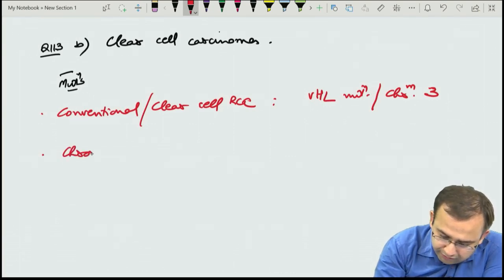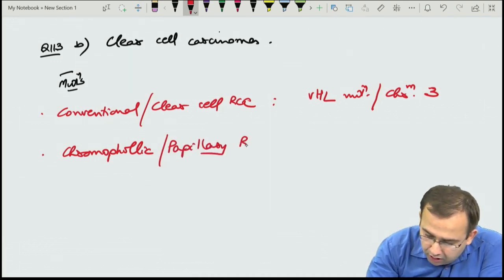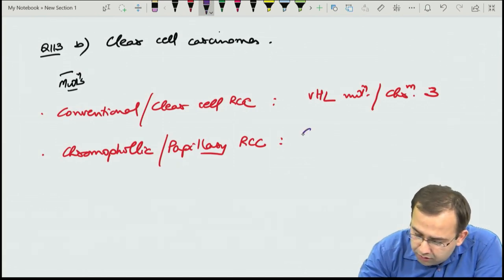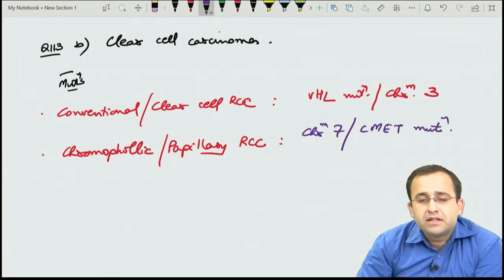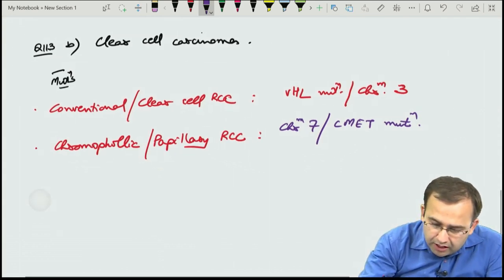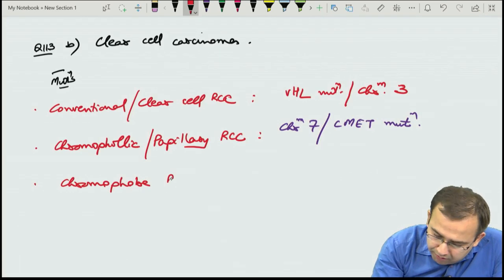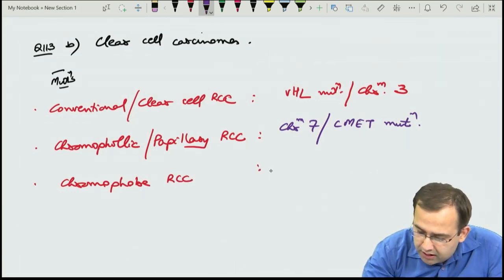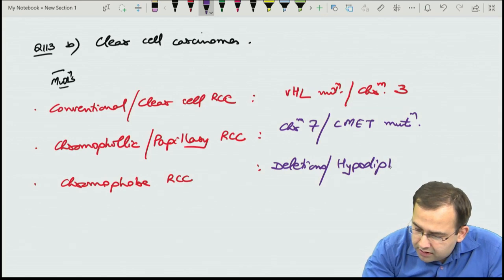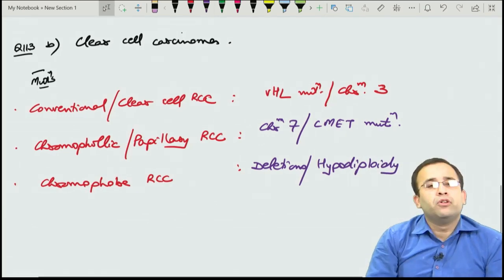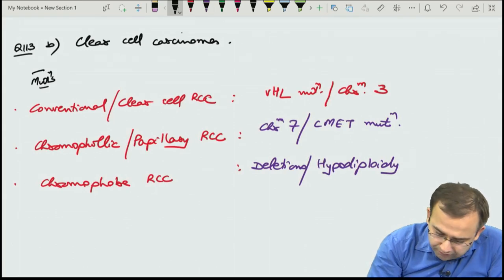Chromophilic or papillary RCC is associated with chromosome 7 or c-MET mutations. Chromophobe RCC is associated with deletions or hypodiploidy — it is phobic of chromosomes.